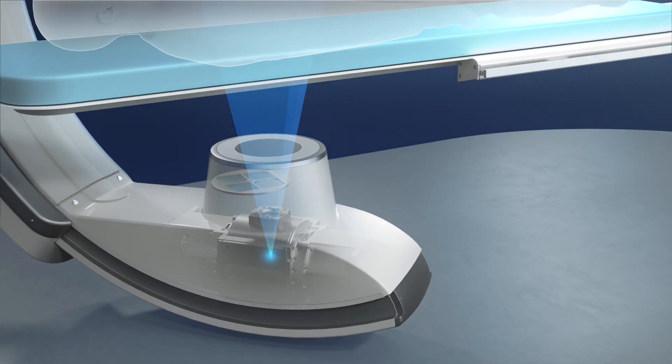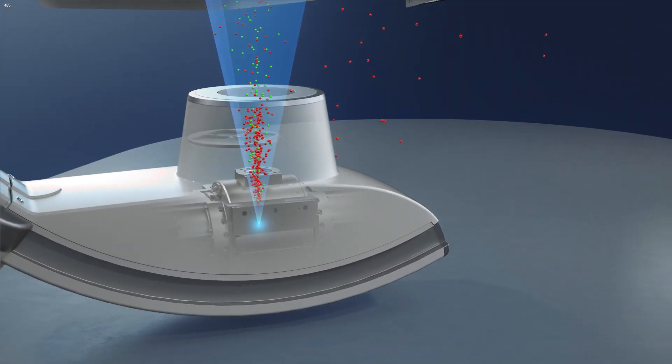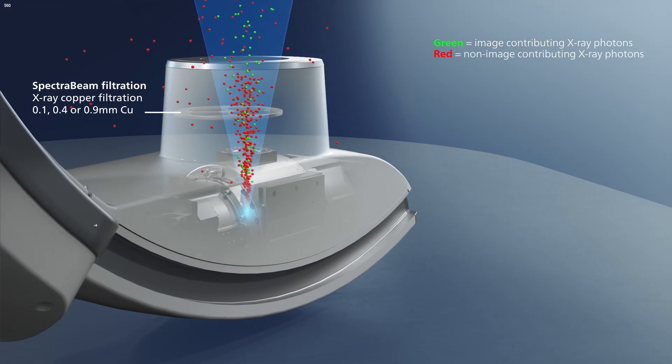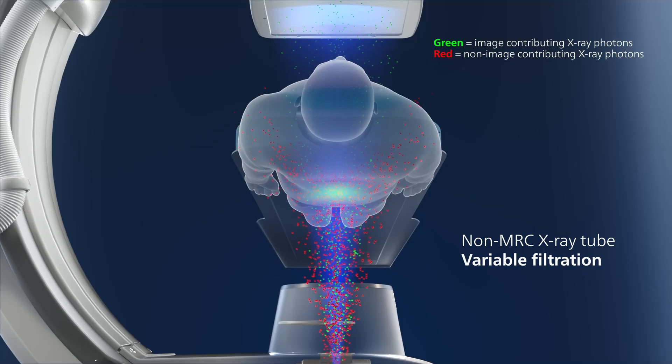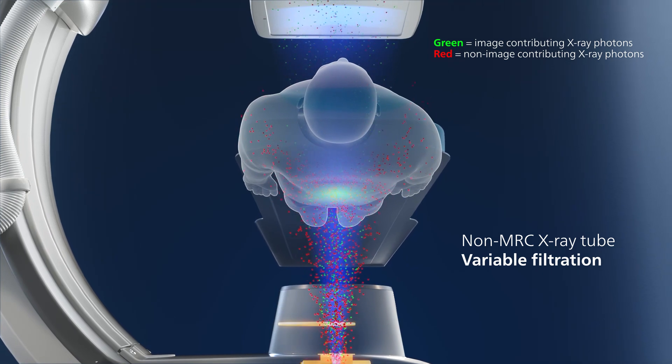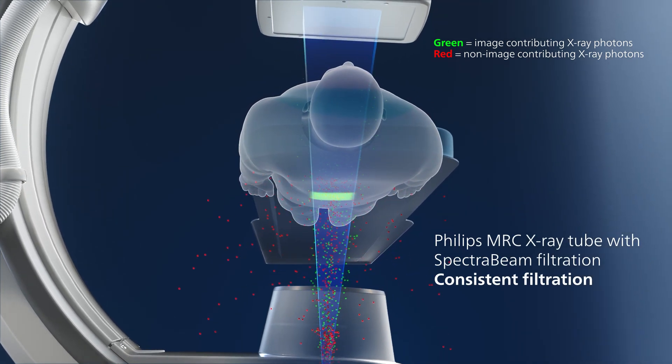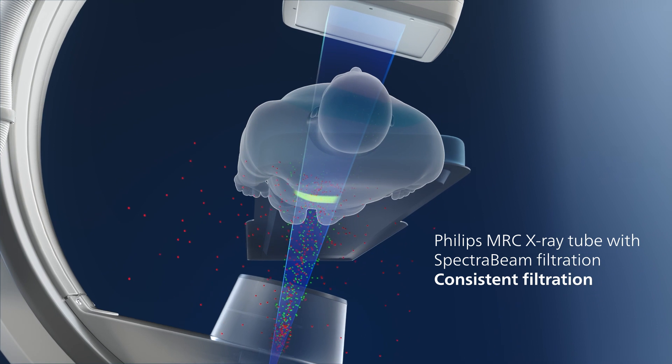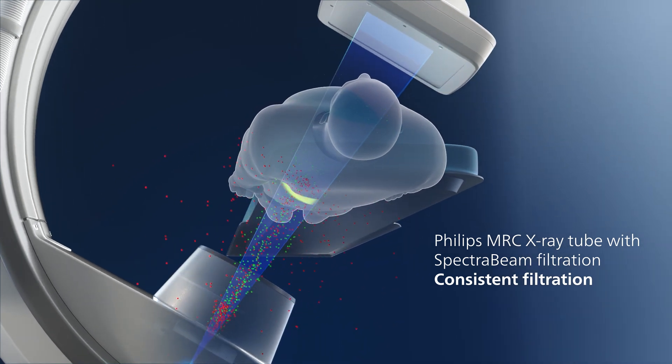Spectra beam filtration is enabled by Philips unique MRC x-ray tube with improved performance and reliability. The unprecedented heat dissipation delivered by the tube enables spectra beam filtration to manage the patient's x-ray dose while maintaining superb image quality.